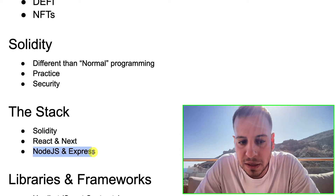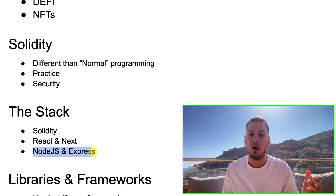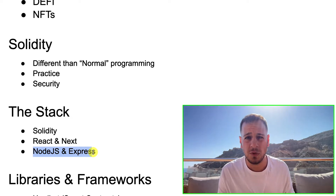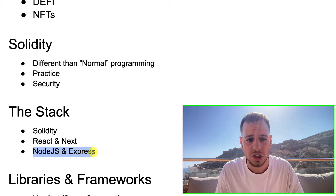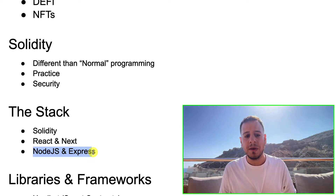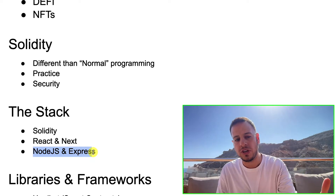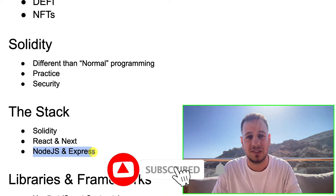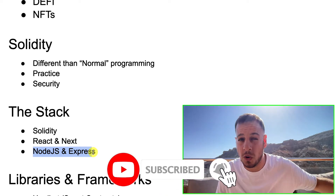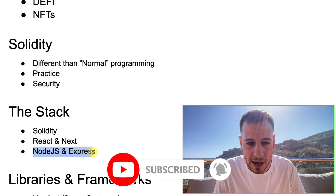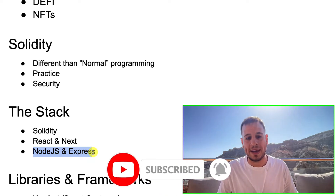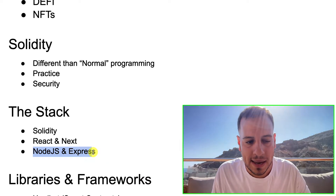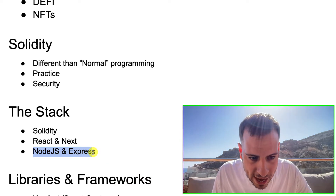For back-end, if you want to write bots or applications that integrate with smart contracts, usually people use Node.js with Express if you want to expose an API. So for back-end it's Node.js and Express, and for front-end React and Next.js.